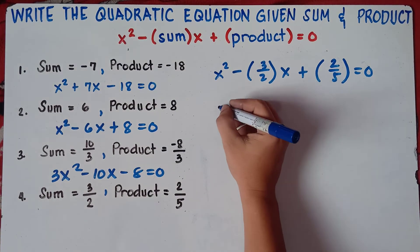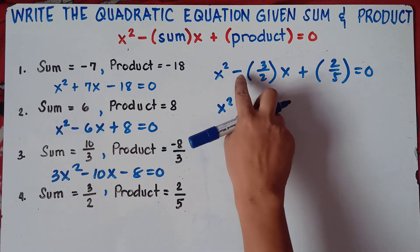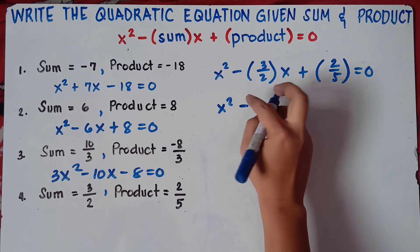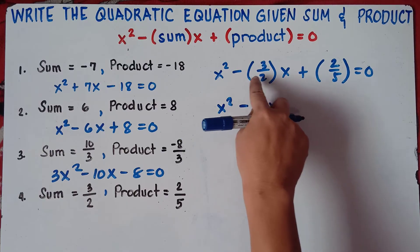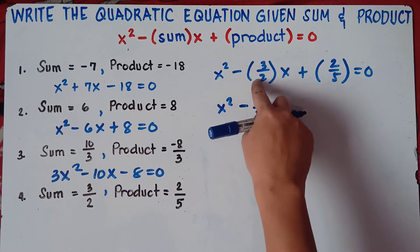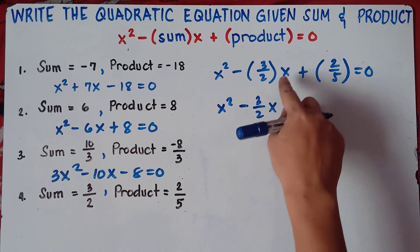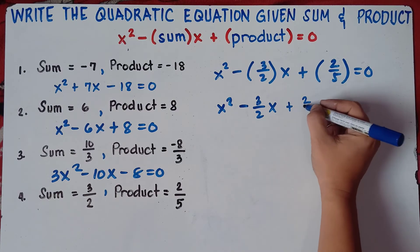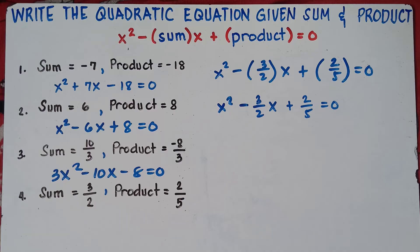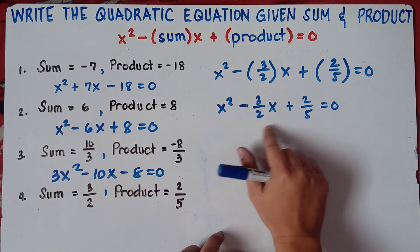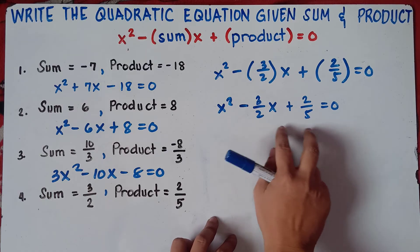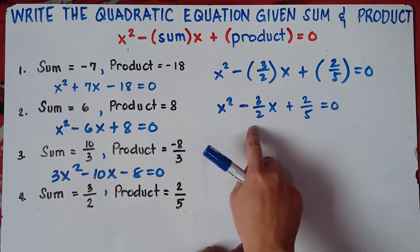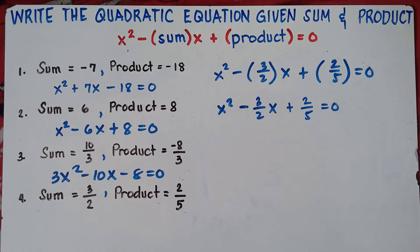So simplify this one first. This will be x squared. Negative times positive is negative, so negative 3 over 2x. Then positive times positive 2 over 5, that's positive 2 over 5, equals 0. Now we need to eliminate the denominators. They don't have the same denominators — a while ago they had the same denominator of 3, so we multiplied by 3. Now we need to find the LCM.